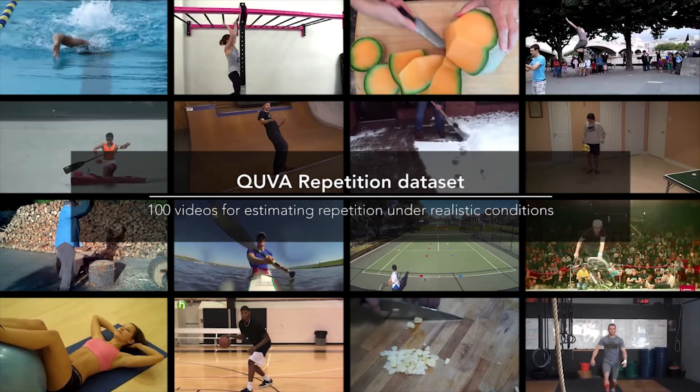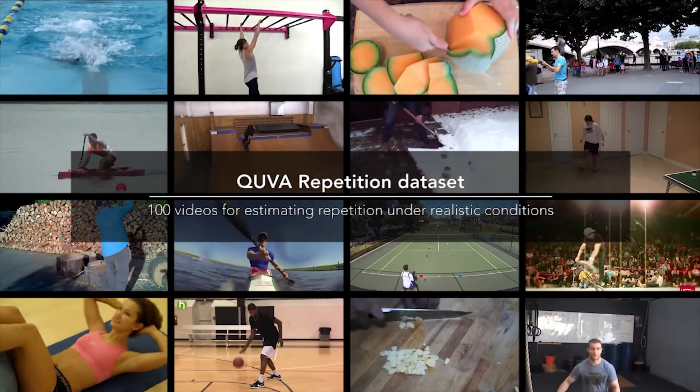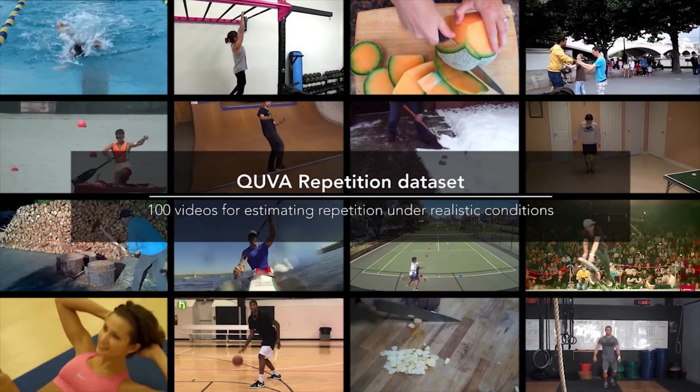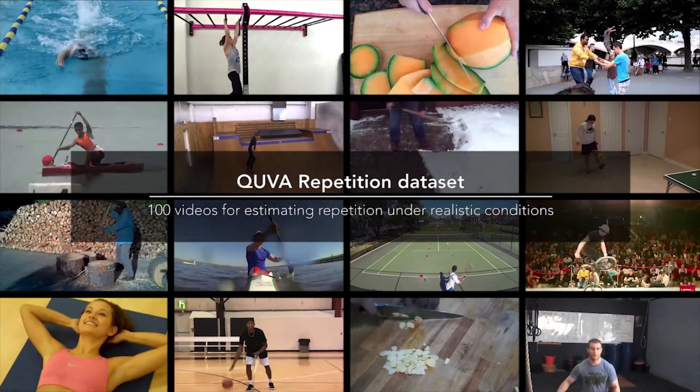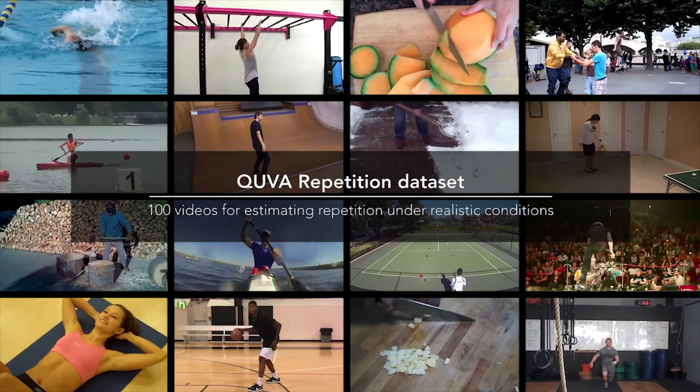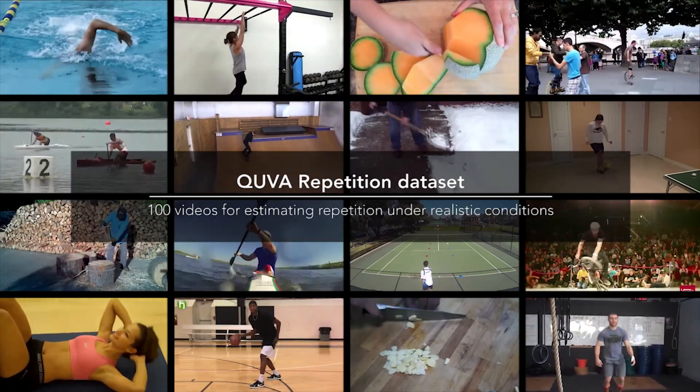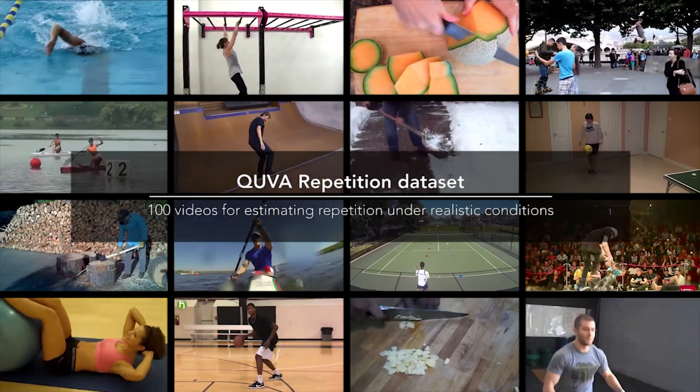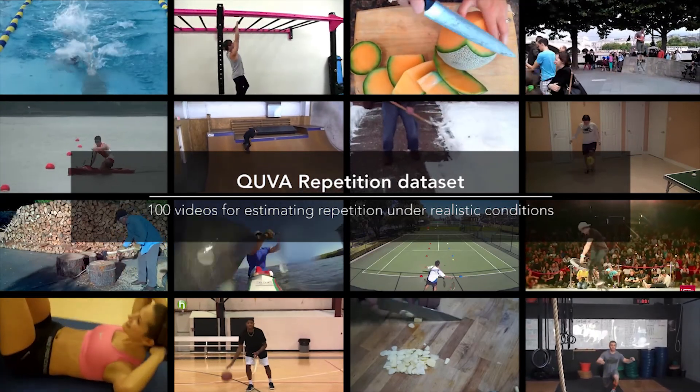To evaluate our method and compare to the state-of-the-art, we propose the new OUVA repetition dataset. Our dataset consists of 100 videos displaying a wide variety of repetitive actions. Different from existing datasets, we include more videos with non-stationarity and non-static appearances.